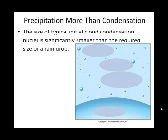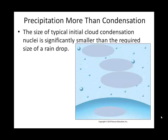We're leading up to precipitation. We've talked about condensation — condensation at the Earth's surface can give us fog, dew, or frost. Condensation within clouds begins with what we talked about earlier in Chapter 5: little water vapors joining together around what we call cloud condensation nuclei.